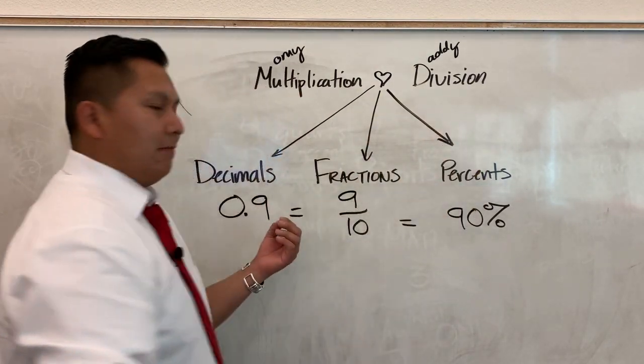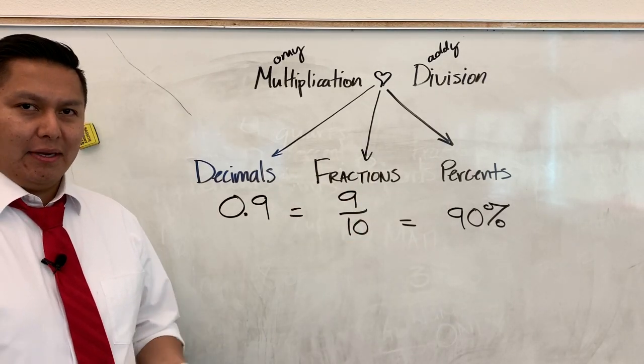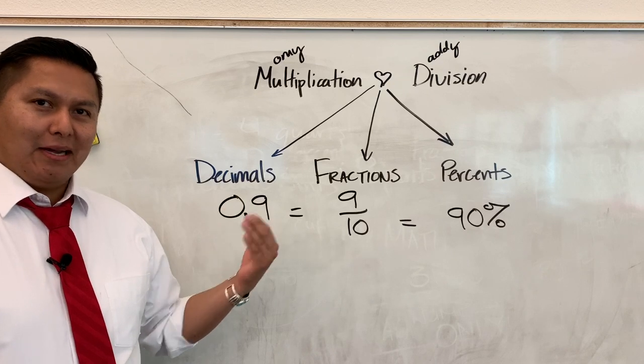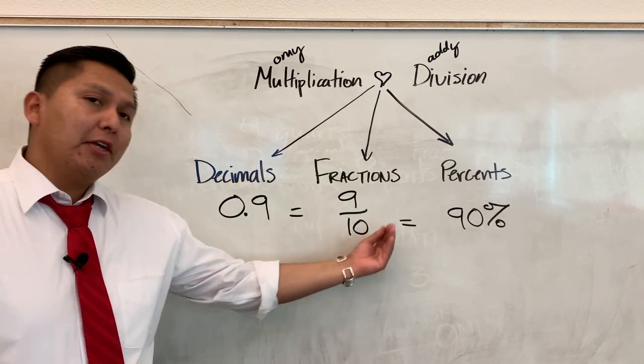We have decimals, fractions, and percents. Now just like any sibling, they're all related, but yet they're all unique. So they're expressing themselves in their unique forms.